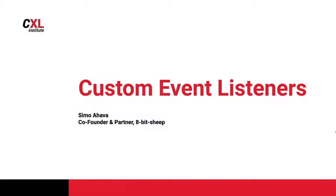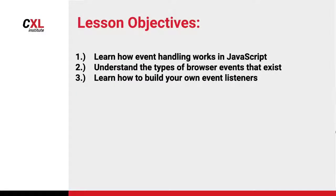In this lesson, we'll create our own custom event listeners. Picking up from the previous lesson, we'll use the browser's own APIs to build event handling capabilities directly into GTM — using events that GTM doesn't record by default. We'll learn how event handling works in JavaScript, understand the different types of browser events, and then use form tracking events specifically to learn how to build our own event listeners in GTM using the custom HTML tag.